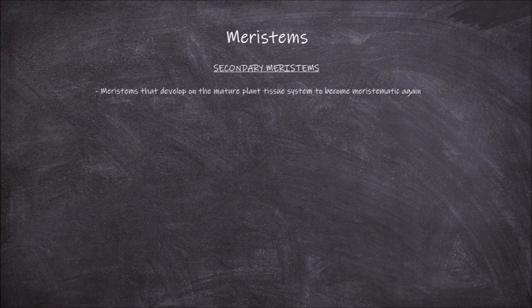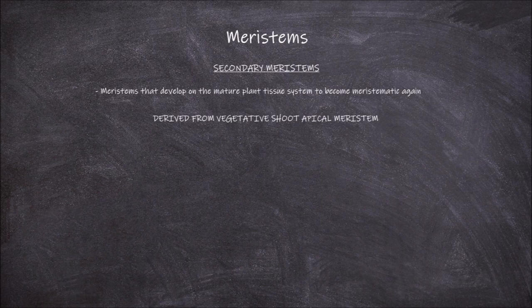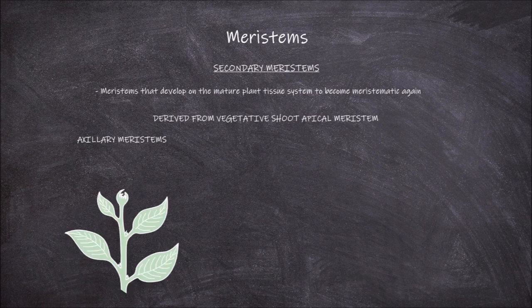Secondary meristems are meristems that develop on the mature plant tissue system to become meristematic again. There are a range of secondary meristems that can occur in plants. One kind of secondary meristem are the variants that are derived from the vegetative shoot apical meristem. One of these variants is the axillary meristem. Axillary meristems are located in the axils of leaves. They go on to form the tissues that form new branches.